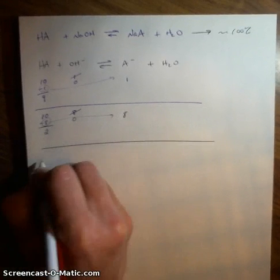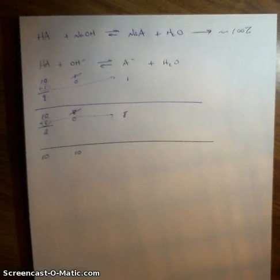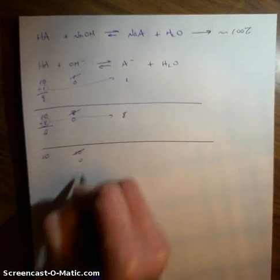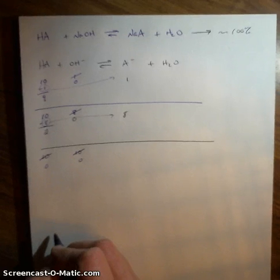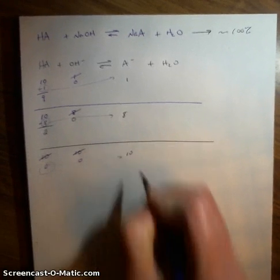Third example: I start with 10 acid and add 10 hydroxides. Still a strong reaction at 100%. I use up all the base, and because it's 1 to 1, I also use up all the acid. Where did it go? It became conjugate base. Now I have 10 of the conjugate.